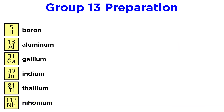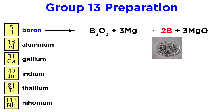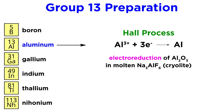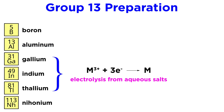So how are these elements prepared industrially? Boron can be isolated as an amorphous solid from diboron trioxide using magnesium. Aluminum can be prepared through the Hall process, which is the electroreduction of aluminum oxide in molten cryolite. Gallium, indium, and thallium are prepared by electrolysis from aqueous salts.